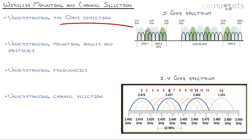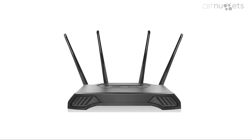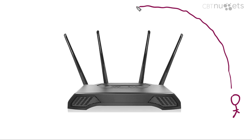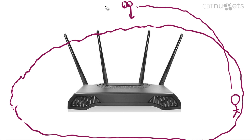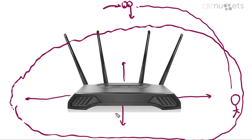Just about every wireless access point you buy for your house is going to be an omnidirectional antenna, which means it transmits equally in all directions. If you climbed a really tall ladder, stood above this omnidirectional wireless access point, and looked down with the ability to see the wireless signal, you would see something that looks like a big circle — radiating outward in all directions horizontally. We're looking from the top down.